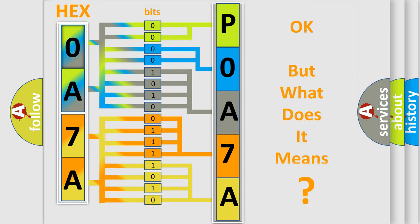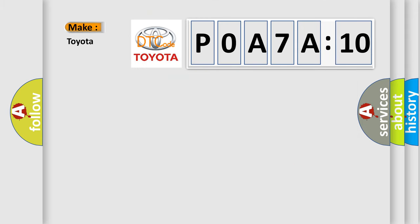The number itself does not make sense to us if we cannot assign information about what it actually expresses. So, what does the diagnostic trouble code P0A7A:10 interpret specifically?